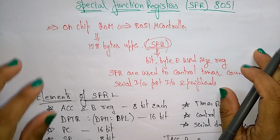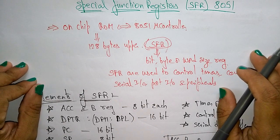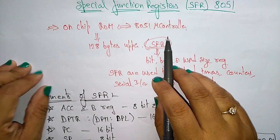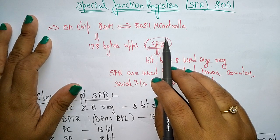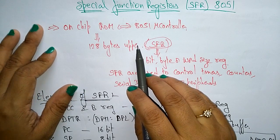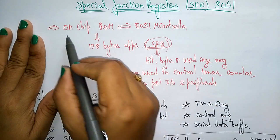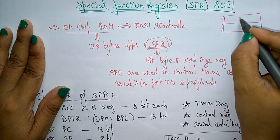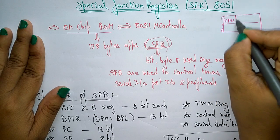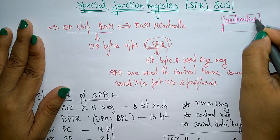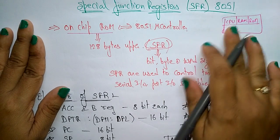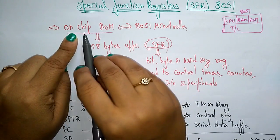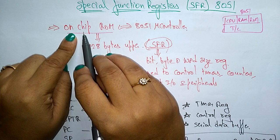Coming to the next topic: special function registers present in the 8051 microcontroller. The special function registers occupy the upper 128 bytes of on-chip RAM. The 8051 microcontroller has a central processing unit, RAM, ROM, timers, and counters — all present within the chip.